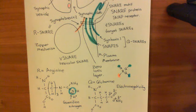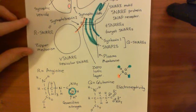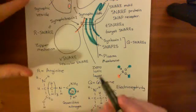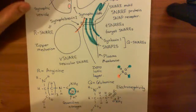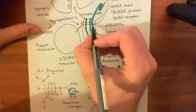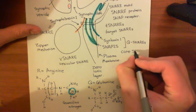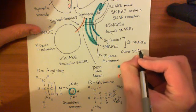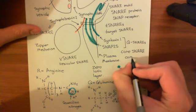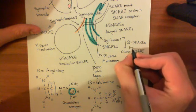Welcome to this next video in which we are discussing synaptic vesicle fusion. So far what we have discussed is the formation of these core SNARE complexes. This complex of the four alpha helices wrapped around one another is known as a core SNARE complex, and specifically at the moment it's what's known as a trans-core SNARE complex.